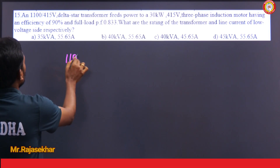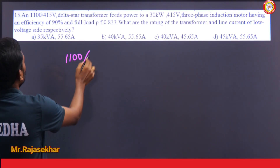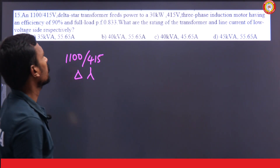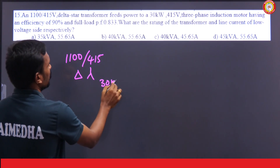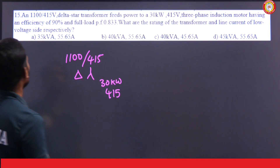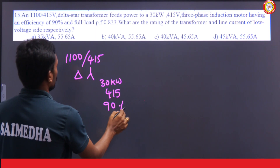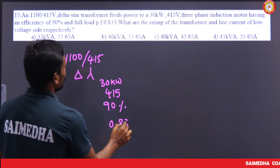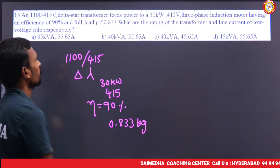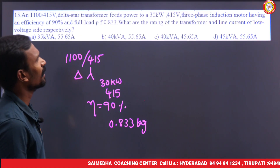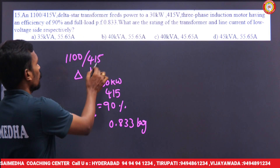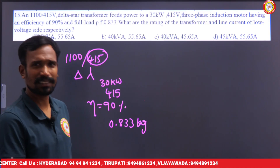A 1100 by 415 volt delta-star transformer feeds power to a 30 kilowatt, 415 volt three-phase induction motor. The efficiency is 90% at full load with a power factor of 0.833 lagging. They are asking for the rating of the transformer and the line current on the low voltage side.